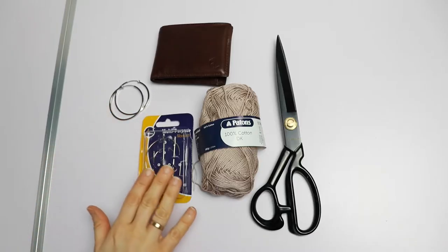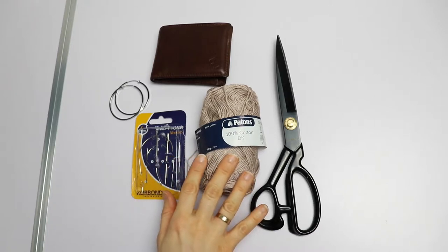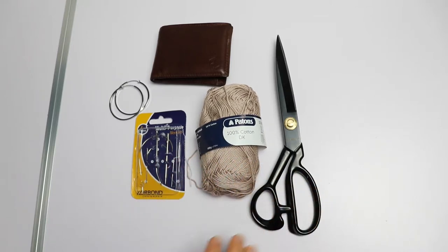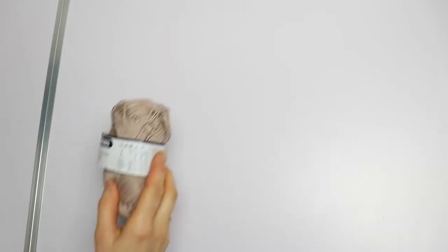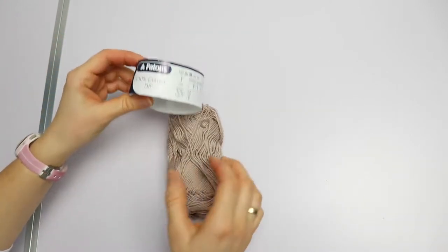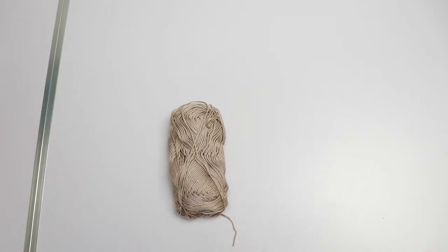For this project we will need round earrings, needles, yarn, sharp scissors and a wallet for wrapping yarn on it. The yarn that I've used is Patons 100% cotton, it's 4mm thick.